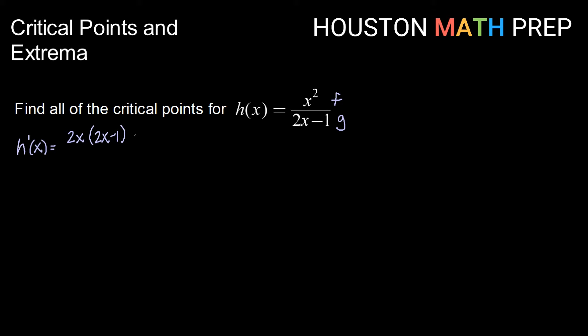2x minus 1, minus f times g prime, or x squared times 2, and that will be all over g squared, or 2x minus 1 squared.